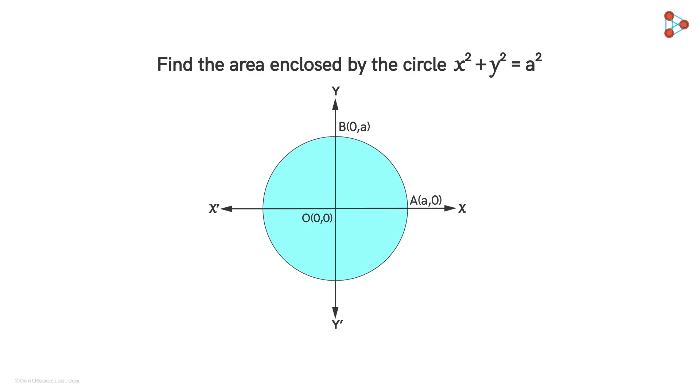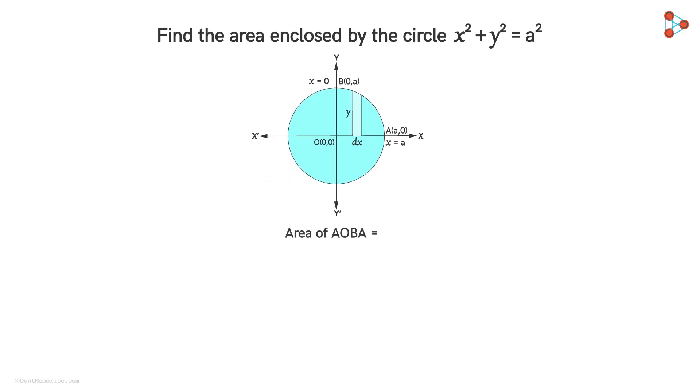Now the area of the region AOBA is the area enclosed by the circle between the x-axis and the coordinates x=0 and x=a. If we consider a vertical strip of height y and width dx as shown, then the area of the region AOBA will be equal to the integration 0 to a y dx. Thus, the area of the entire circle will be given by 4 times the integration 0 to a y dx.